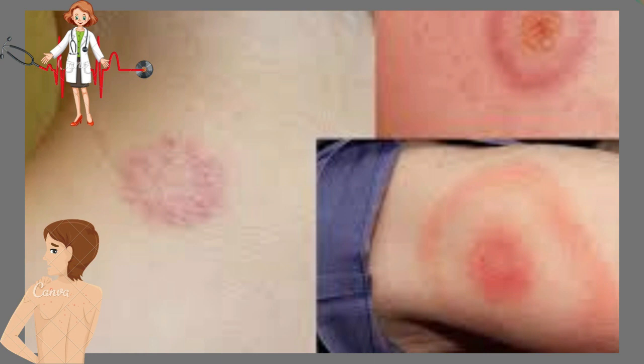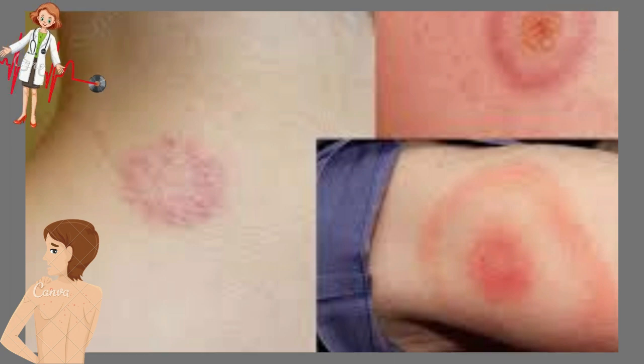EAC is characterized by annular, occasionally atrophic patches and plaques, often polycyclic, with a slightly elevated outer rim on the trunk and proximal extremities. It is seen sometimes in association with drug ingestion or with minor infections such as tinea pedis, but other times cannot be related to a known cause.